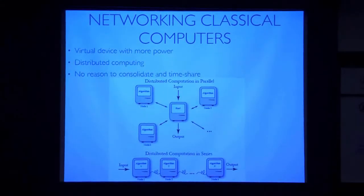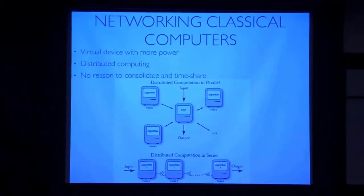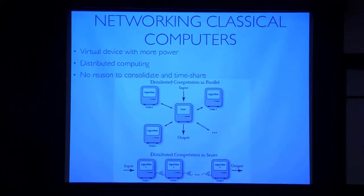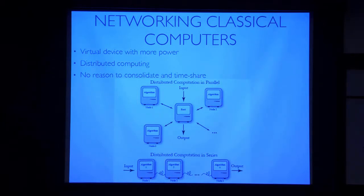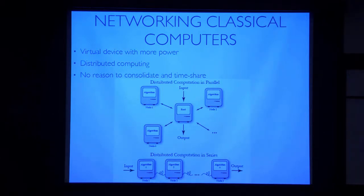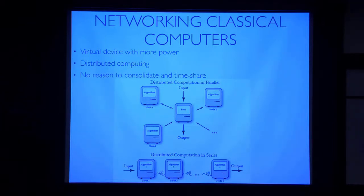Let's think about classical computer networks. It's very common for people to take a large number of classical computers and network them together into a cluster to make a more powerful computer. You can go to Amazon and license out a certain number of CPUs for a certain amount of time for a certain amount of money, and it will process things in series or in parallel — distributed computation. Imagine two people, Alice and Bob, who both have a computer of a particular power. One option is they each use their own computer all the time. The other is that they network them into a cluster to make a virtual computer that's more powerful, and timeshare it — each agreeing to use it half the time.